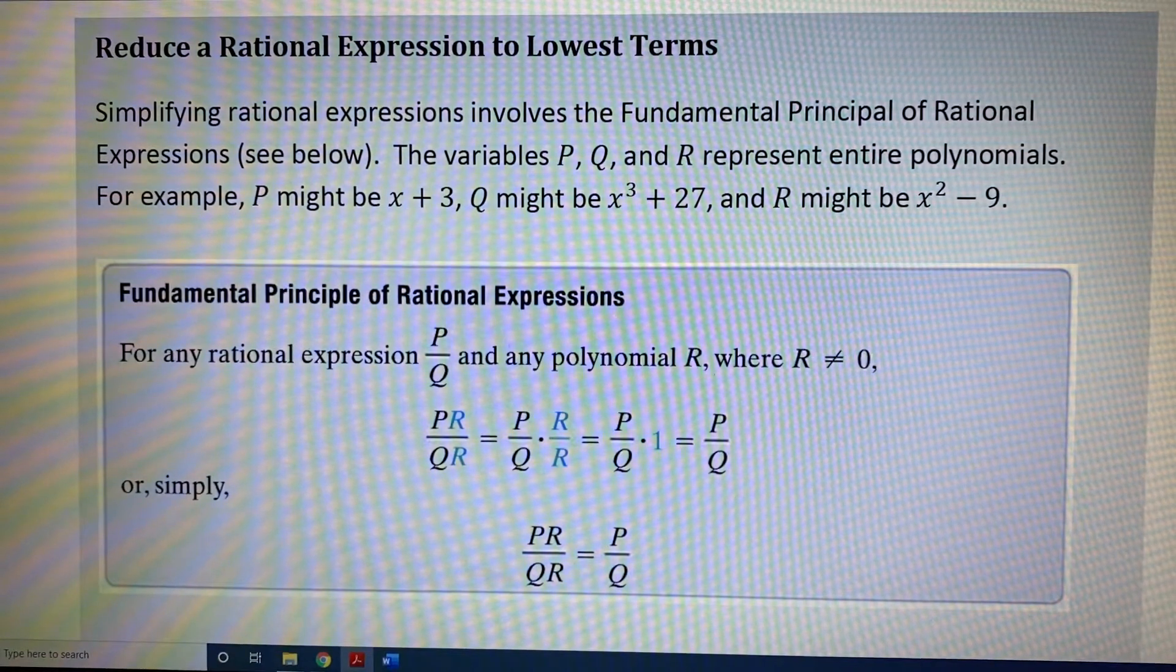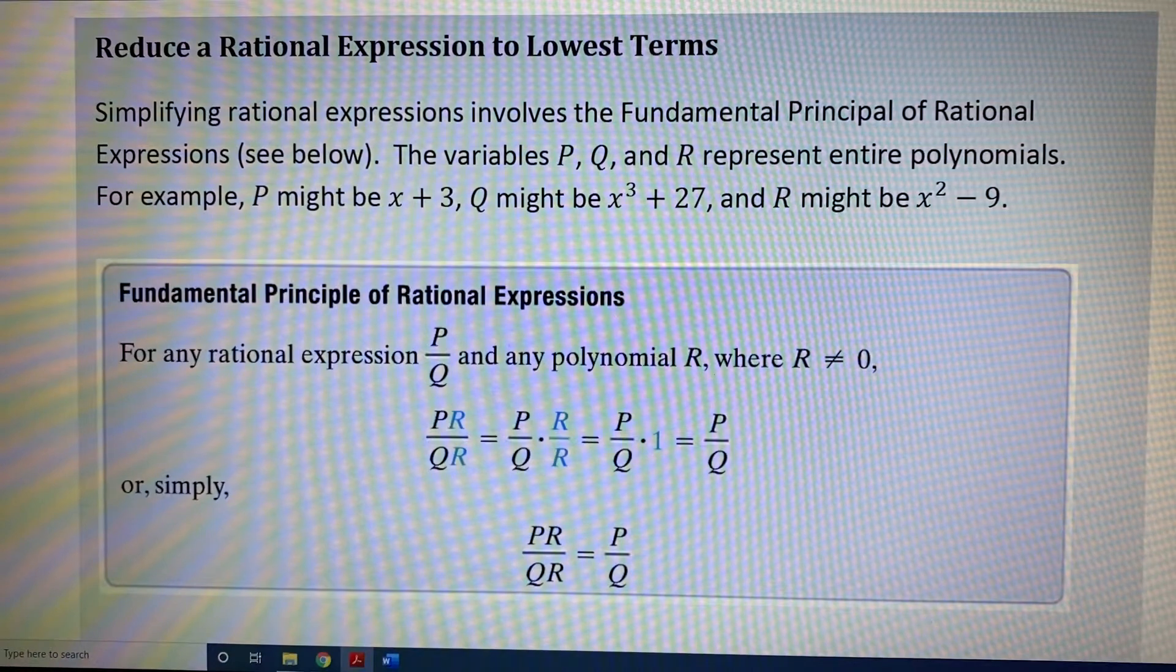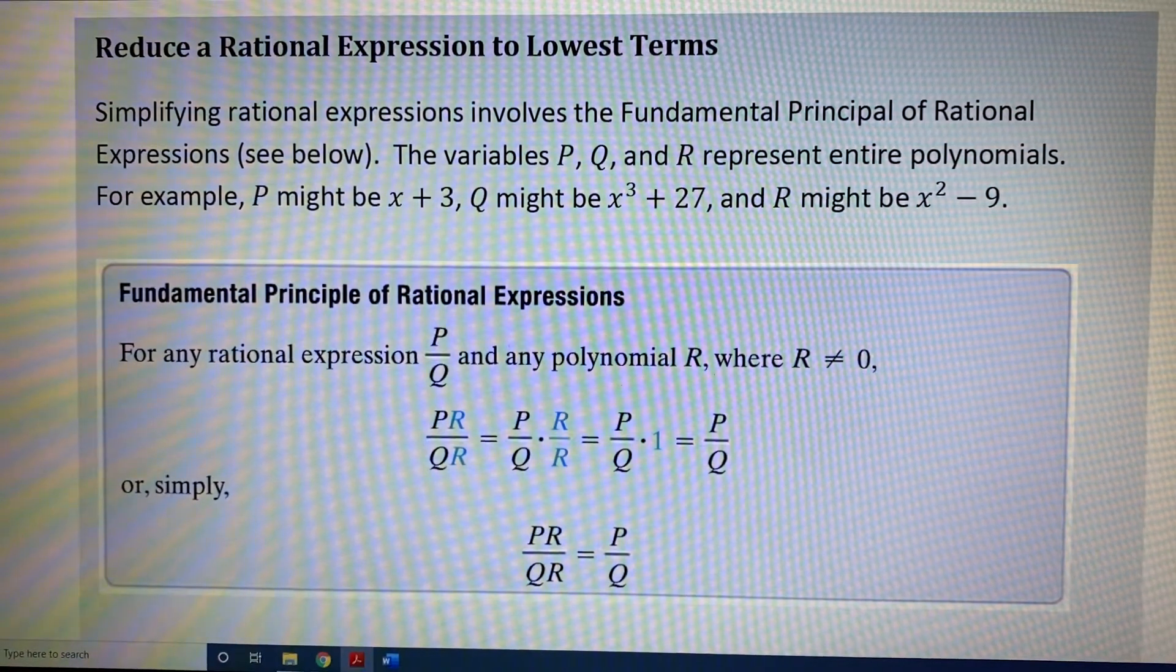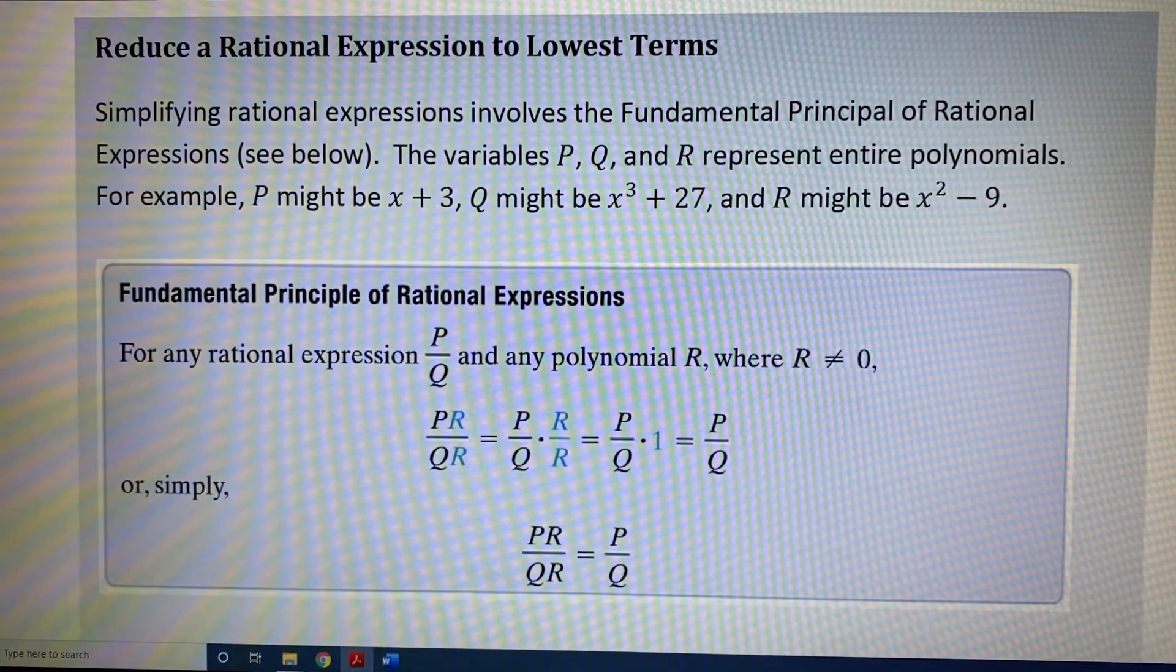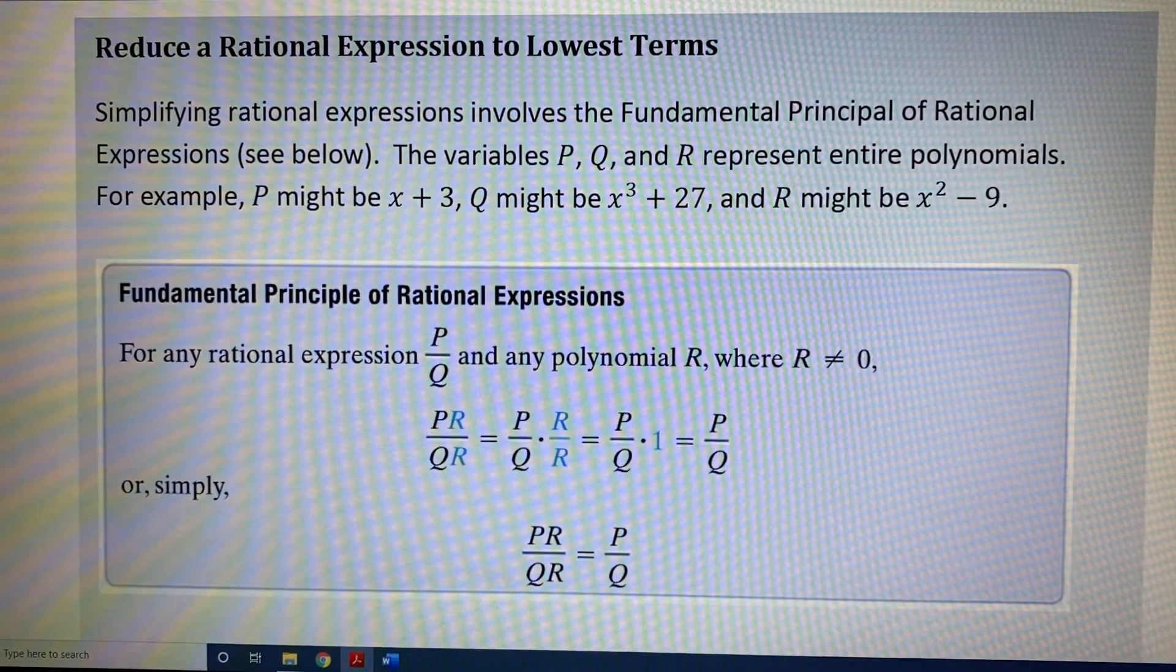The variables P, Q, and R represent entire polynomials. For example, P might be x plus 3, Q might be x cubed plus 27, and R might be x squared minus 9.